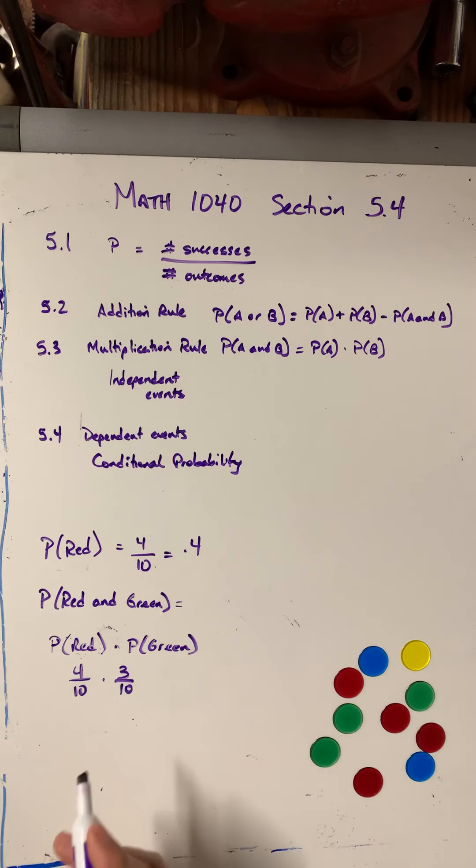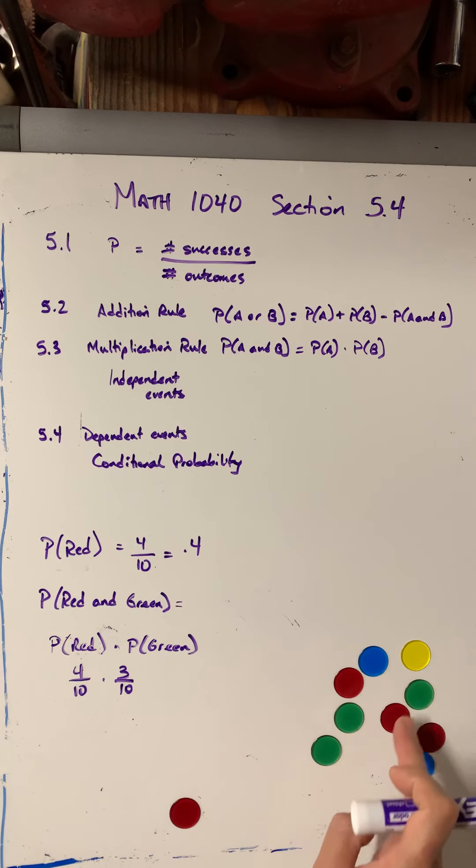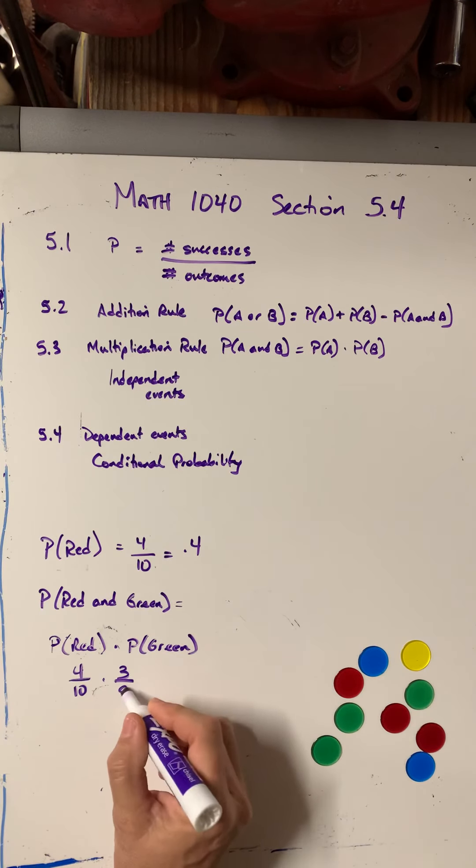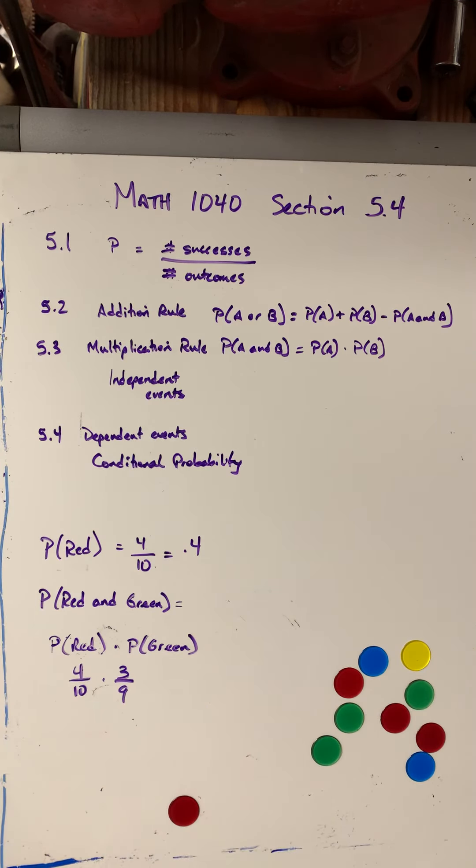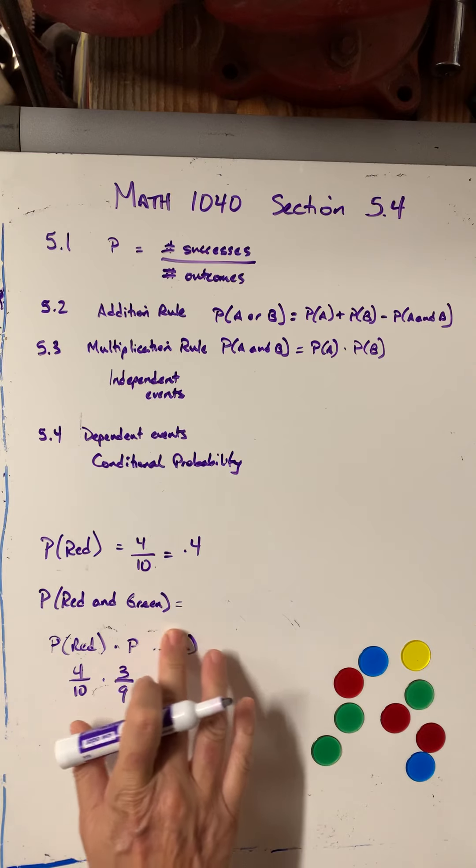And now the probability of getting a green is 3 out of 10. But what if I don't replace it? What if I pull it out? So this is called without replacement. Then how would that affect the probability of getting a green? I would still have three possible greens, but only out of 9 chips. So it would affect my probability for the green.